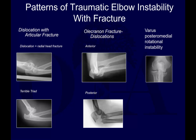Different injury patterns include a dislocation with an articular fracture, an olecranon or proximal ulna fracture-dislocation — some prefer the latter term because the injury extends well beyond just the olecranon process. In these proximal ulna fracture-dislocation patterns, the ulnohumeral joint is not completely dislocated the way it is in a terrible triad. The radiocapitellar joint may be clearly dislocated with a proximal ulna fracture, but the ligaments may be partially spared.